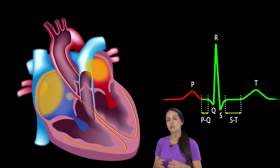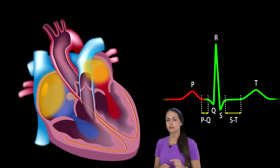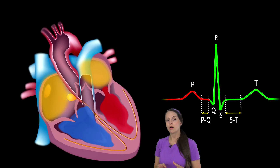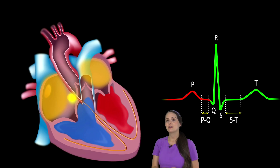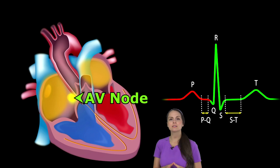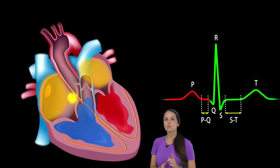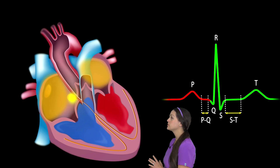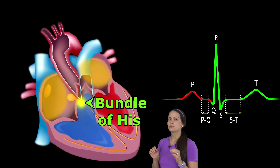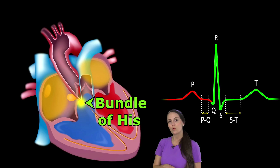The P wave should have certain characteristics if the SA node is firing correctly: it should be upright, and there should be one in front of every QRS complex. After electrical signals leave the SA node, they go down to the AV node — the second pacemaker of the heart — causing the heart to beat at about 40 to 60 beats per minute. It has the nickname 'gatekeeper' because it causes a delay in electrical signaling so the atria can fully empty into the ventricles. Then signals go down to the bundle of His, our third pacemaker, causing the heart to beat at about 20 to 40 beats per minute.